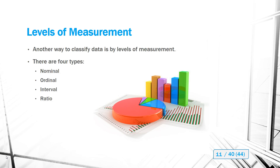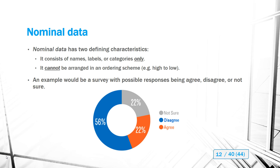We can also classify data by levels of measurement, of which there are four types: nominal, ordinal, interval, and ratio. Nominal data has two defining characteristics: it consists of categories only, with no measurements or counts, and it cannot be arranged in any meaningful ordering scheme.